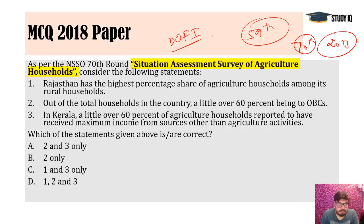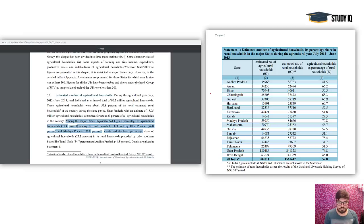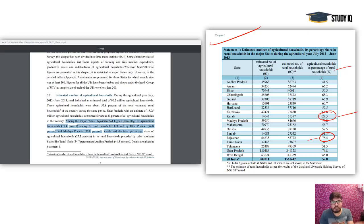When examinations get tougher, this depth of knowledge becomes important. The Hindu articles and PIB data become crucial — questions come directly from here. In the Ministry's statistical report on the assessment survey by NSSO: Rajasthan has the highest percentage share of agricultural households at 78.4%, while Kerala, at only 27.3%, had over 60% of agricultural households reporting maximum income from sources other than agriculture.